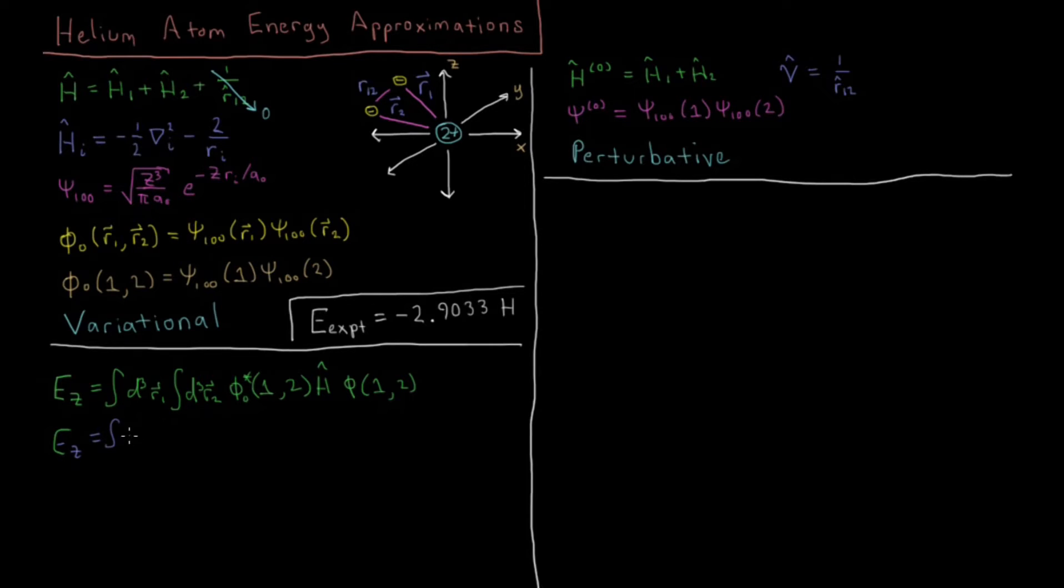So we have integral of R1 which factors out for psi star 1, 0, 0, then Hamiltonian of electron 1 of electron 1, psi 1, 0, 0, again for electron 1, and the same type of integral you get for electron 2. Integrate over the coordinates of electron 2, psi star 1, 0, 0 of electron 2, Hamiltonian of electron 2, and psi 1, 0, 0 of electron 2.